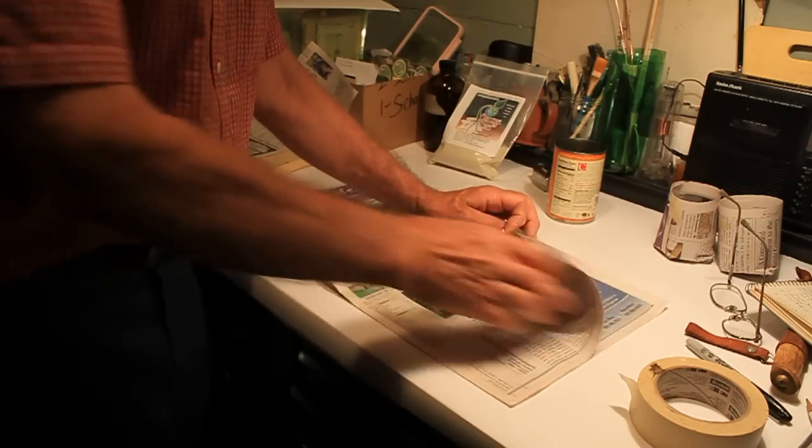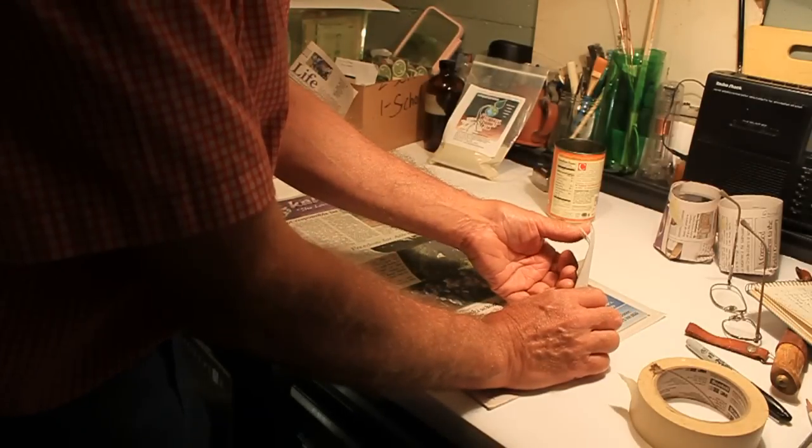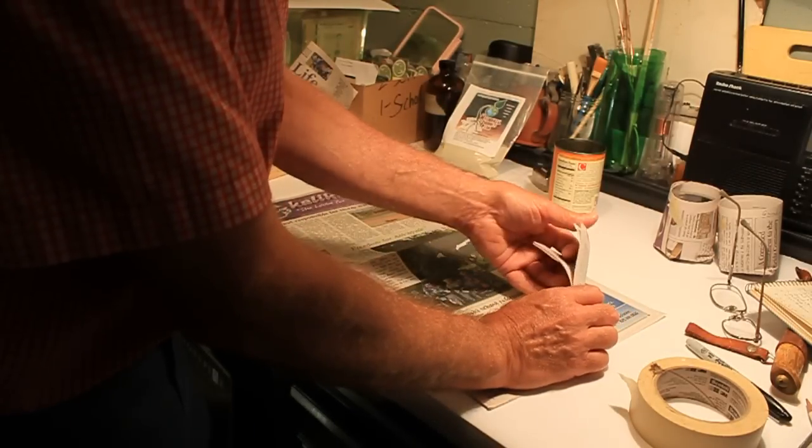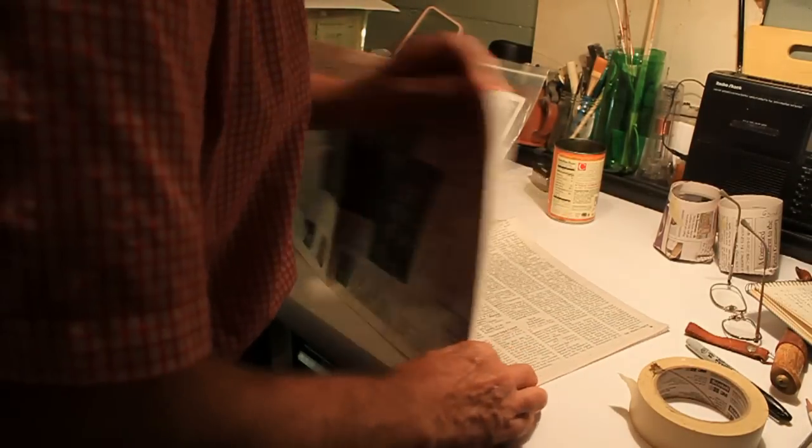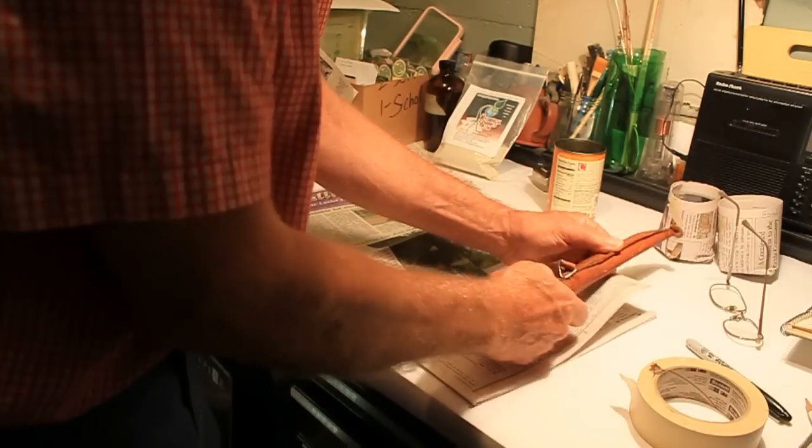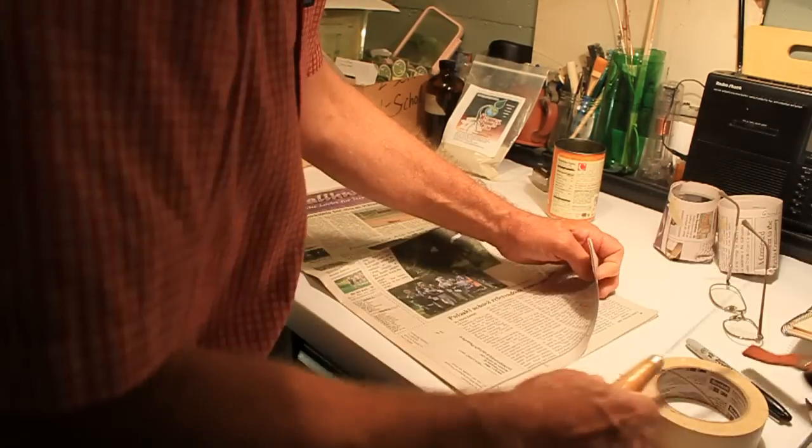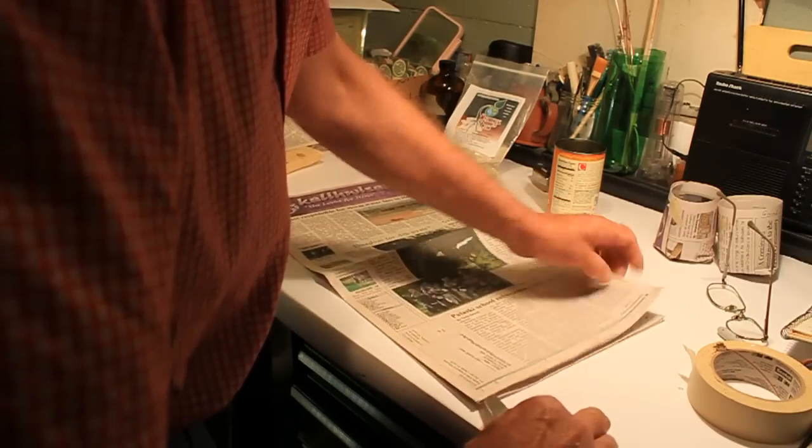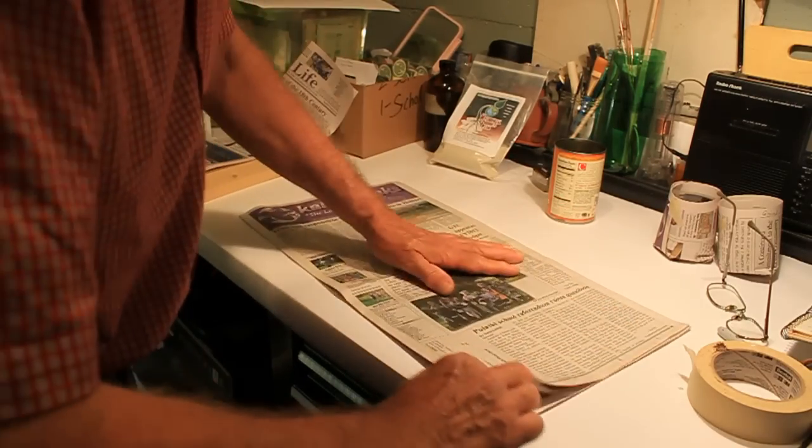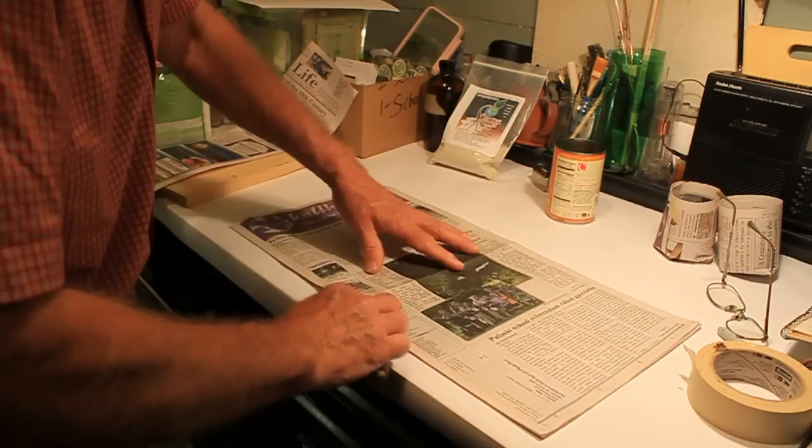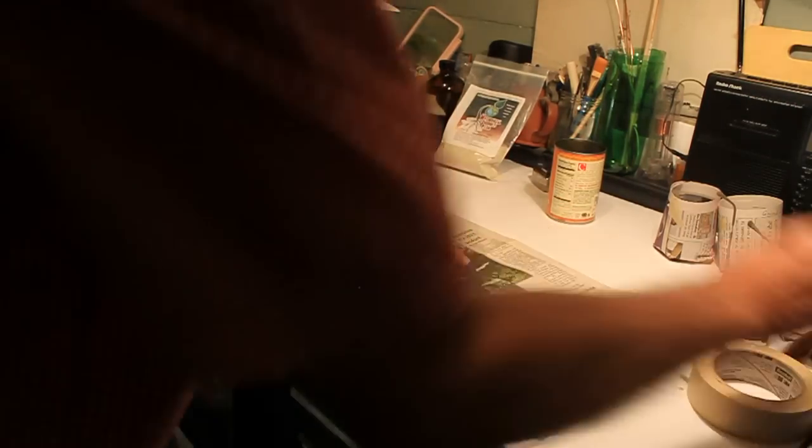The first thing we've got to do is I only want a single sheet to do this pot with. So we're going to find where the center of it is. Get yourself a good sharp knife, and we'll just cut that along there. Be careful not to cut yourself.